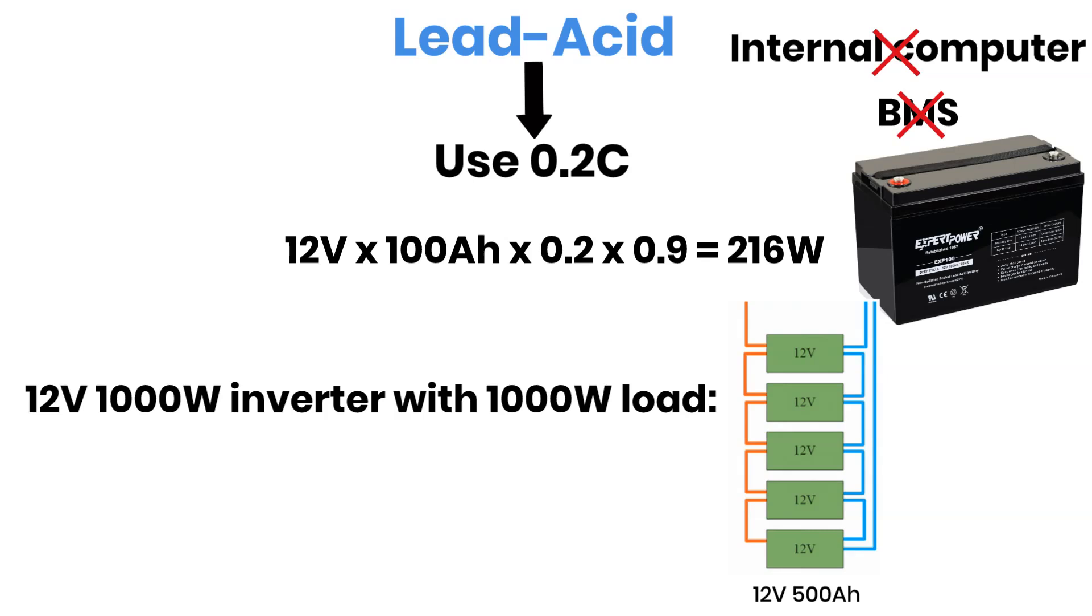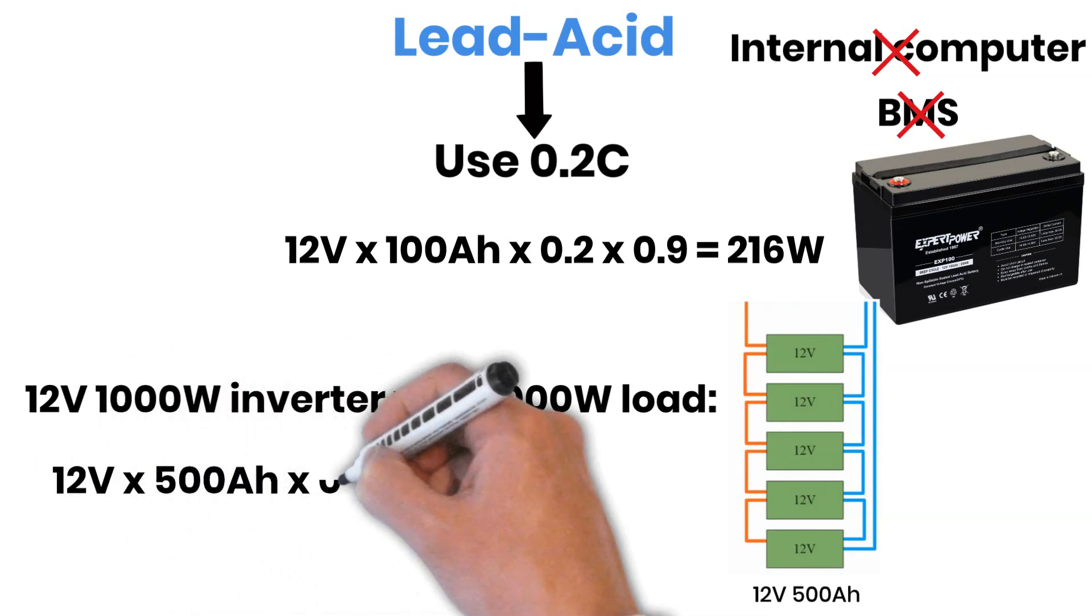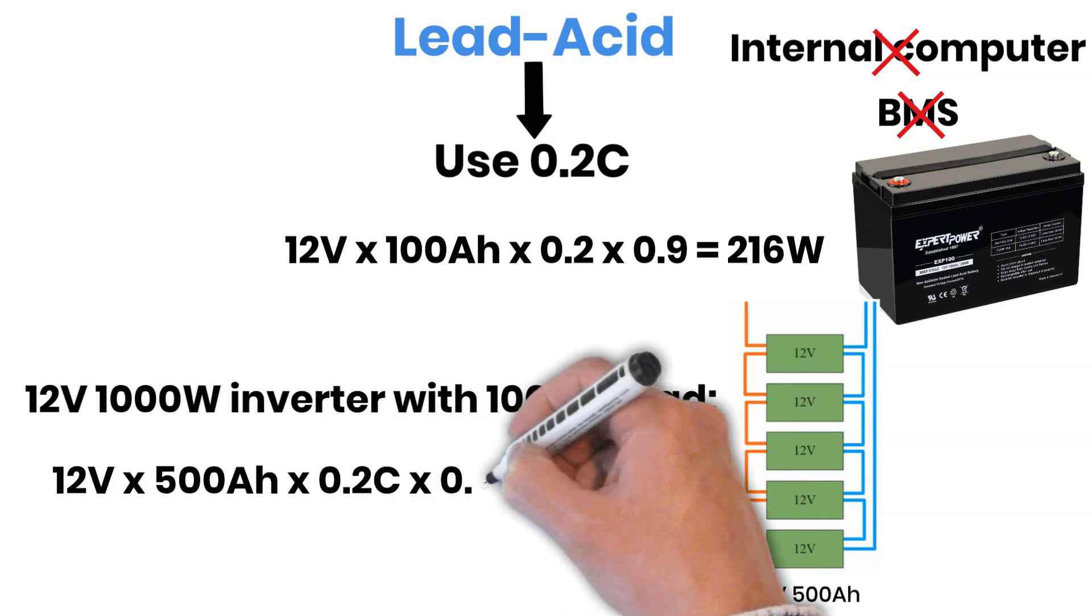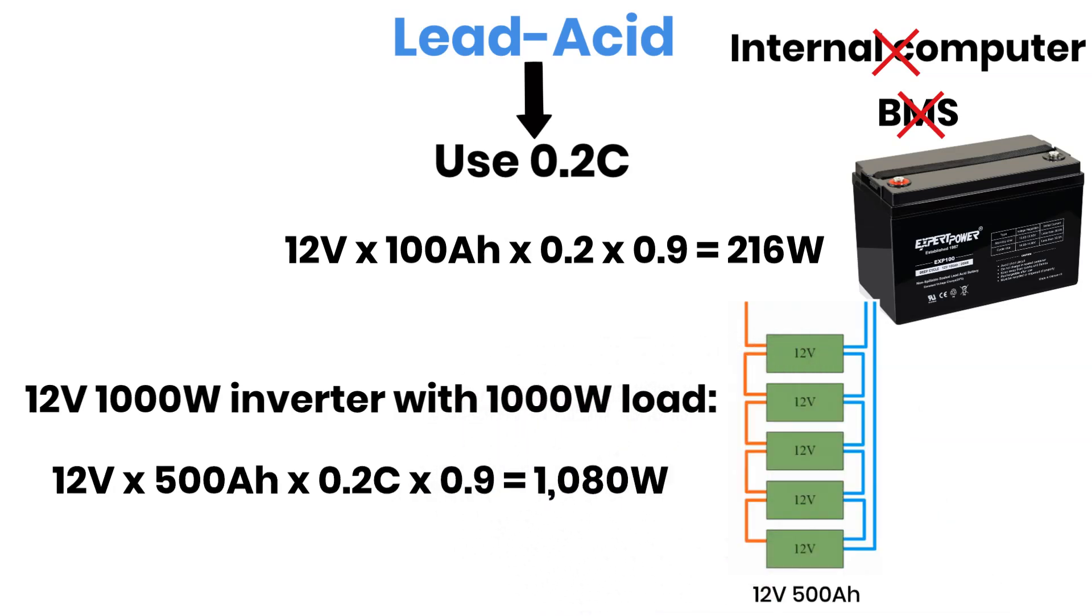Let's check the math behind that setup. 12 volts multiplied by 500 amp hours, multiplied by a C-rate of 0.2, multiplied by 0.9 for losses, equals approximately 1,180 watts. That's enough to comfortably run a 1,000 watt inverter without putting too much strain on the batteries. It might seem like extra work, but that's just how lead acid chemistry operates. You trade simplicity for lower current handling and shorter lifespan under heavy loads.